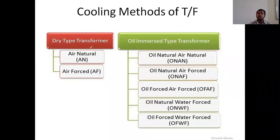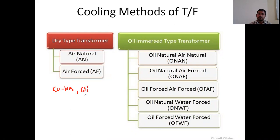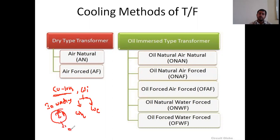In this session I cover cooling methods of transformers. First of all, why do we need to use a cooling system in the transformer? Generally in the transformer, copper losses and iron losses will take place. In the iron losses, hysteresis losses and eddy current losses will take place. Because of the copper losses in the winding, I²R losses are produced, and because of this, heat will be produced.